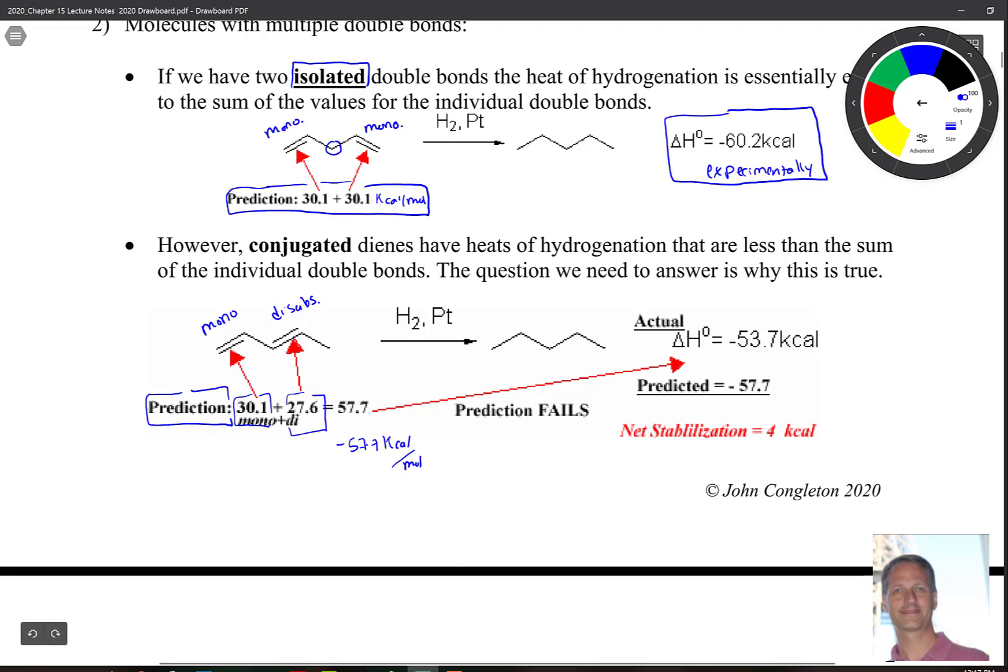And then we go through and we carry this experiment out. And when we do that, we get an experimental number of negative 53.7. So when we compare that to what our predicted number is, which we just did on the left side here, we see that there's a net stabilization of about 4 kcals per mole. Now that's interesting, because that says that when we have these double bonds next to each other, something special happens that makes them more stable. To really understand what happens there, we're going to have to take a look at molecular orbital theory again. So we're going to look at MO theory, and we'll explain that in the next couple of pages.